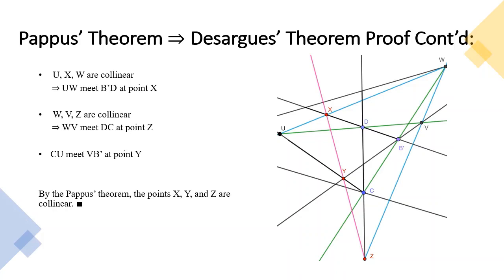Lastly, we focus on the line joining points U, D, and V, and another line joining points W, B', and C. Previously we proved U, X, W are collinear, so the line UW meets line B' at point X. Also, we proved W, V, and Z are collinear, so the line WV meets line DC at point Z. And lastly, the line CU meets the line VB' at point Y. So by the Pappus theorem, the points X, Y, and Z are collinear.